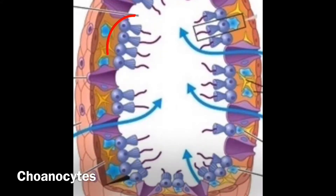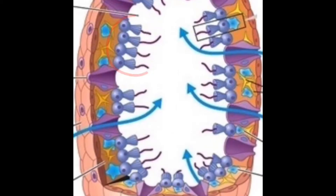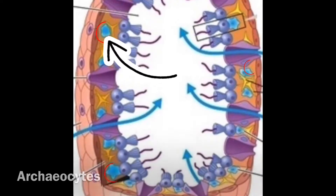These choanocytes have a few hypothesized functions: one, they can create currents within the sponge for circulation of water; two, they help in obtaining food; and three, they can catch sperm for later use in reproduction. Archaeocytes are cells within the sponge that have several potential functions, one major one being food digestion, getting rid of waste, and even producing sperm or eggs.